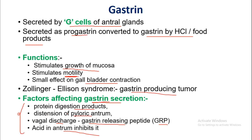To summarize, the factors affecting gastrin secretion are: protein digestion products, distension of the pyloric antrum, vagal discharge or release of gastrin-releasing peptide (GRP), and acid in the antrum, which inhibits gastric secretions. The functions of gastrin are: it stimulates growth of the mucosa, stimulates gastric motility, and has a small effect on gallbladder contraction.